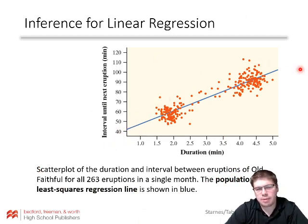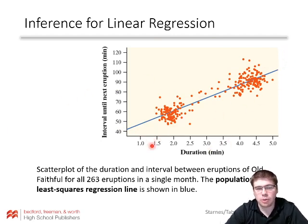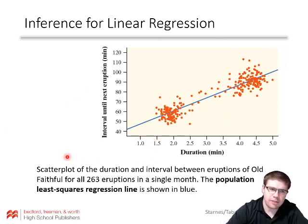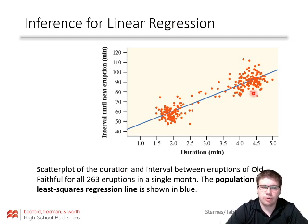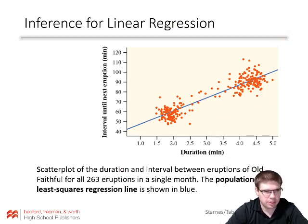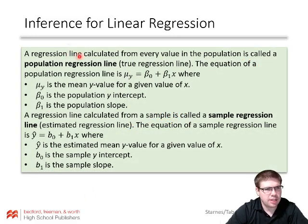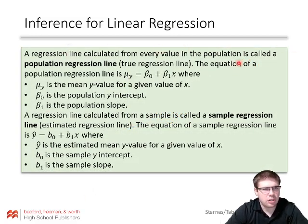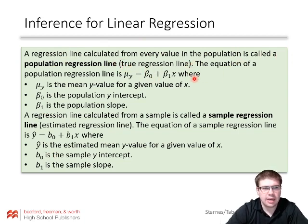When doing linear regression, a lot of times we're working with a sample of data and trying to draw conclusions about a population. So keep in mind that we could sample from this population. A regression line calculated from every value in the population is called a population regression line, or the true regression line.